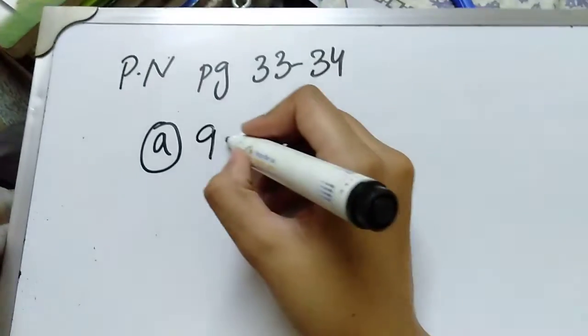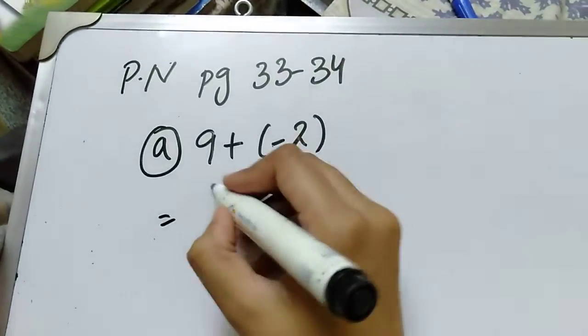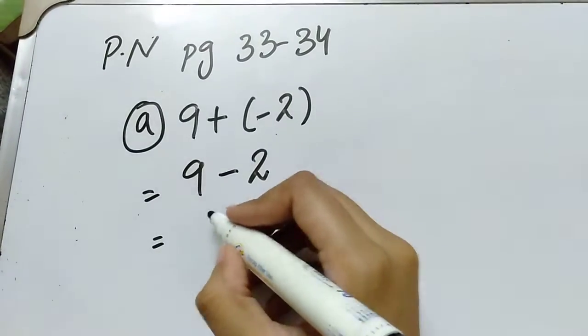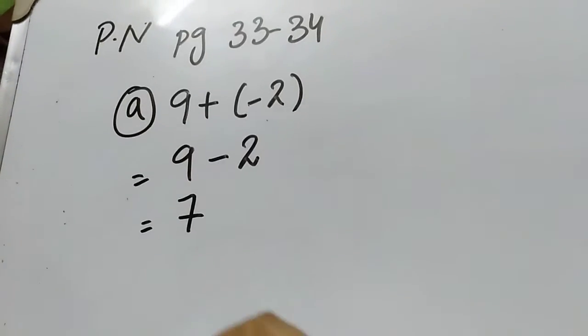Now we are going to solve practice on page number 33 or 34. Part A is 9 plus minus 2. Plus minus is minus, so 9 minus 2 will be 7. So this is your answer.